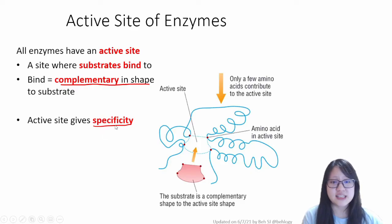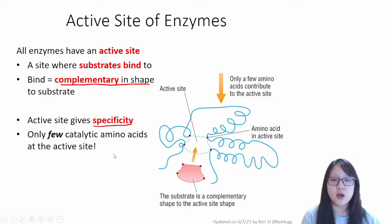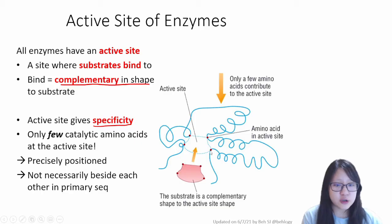Now what gives the active site its specificity? What determines its shape? Well, the entire primary structure of the polypeptide chain. The sequence of amino acids in the entire polypeptide determines the tertiary structure. It determines how it's coiled and folded into a 3D structure, but the active site only actually has a few catalytic amino acids. So not all the amino acids are involved at the active site, only a few. These few amino acids are precisely positioned in the 3D structure, and they're actually not necessarily beside each other in the primary sequence as shown in this diagram here. They can be quite far apart in the chain from each other, but because of the 3D coiling and folding of the enzyme structure, they can be brought closer together at the active site.